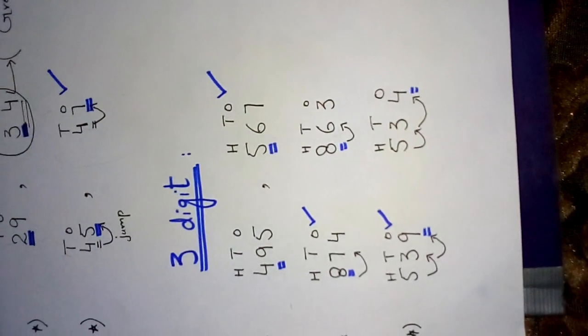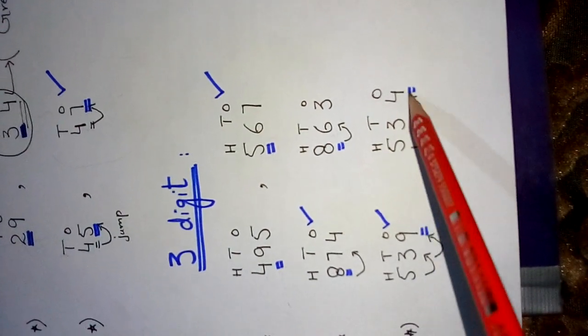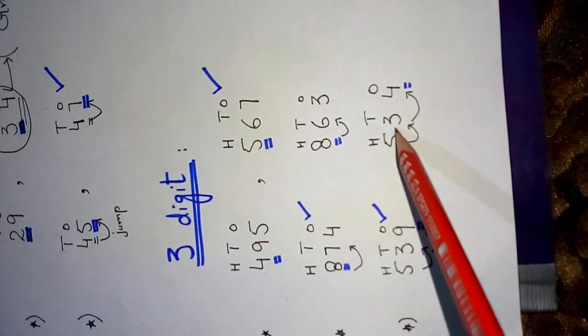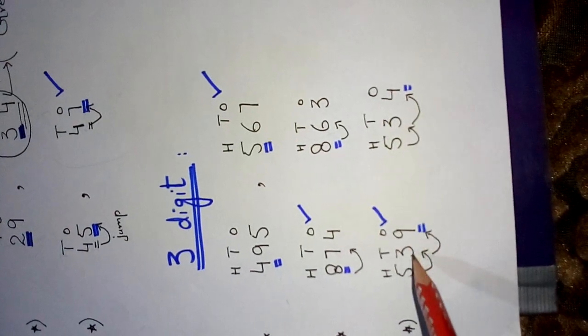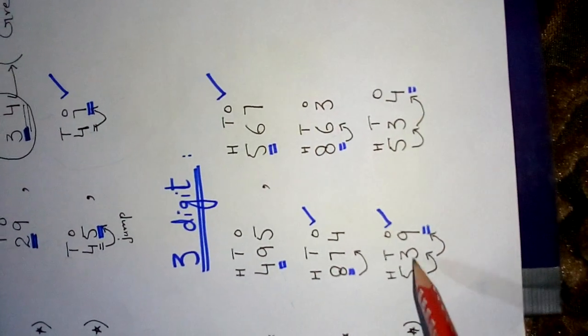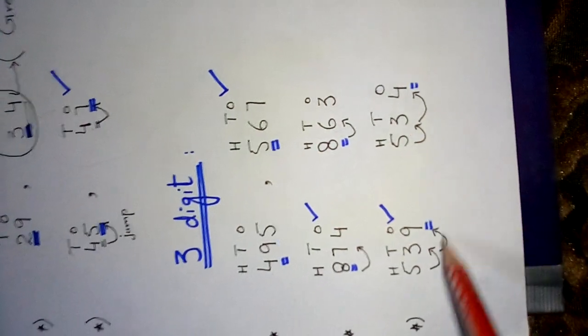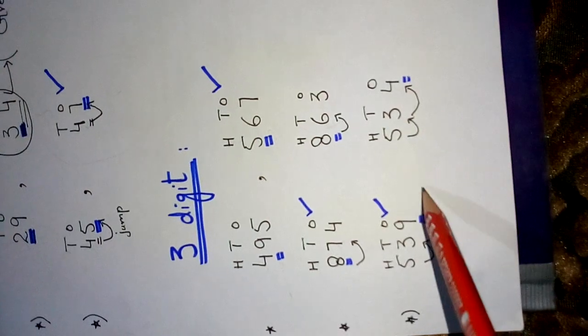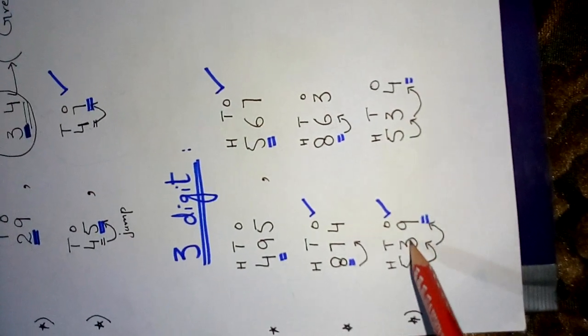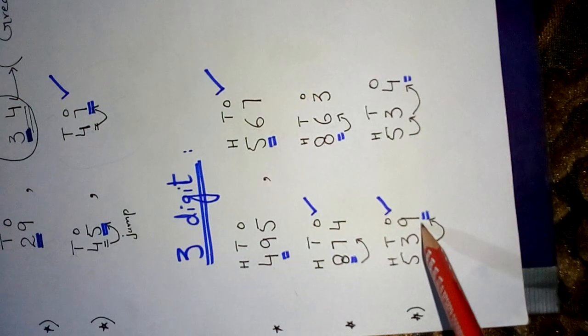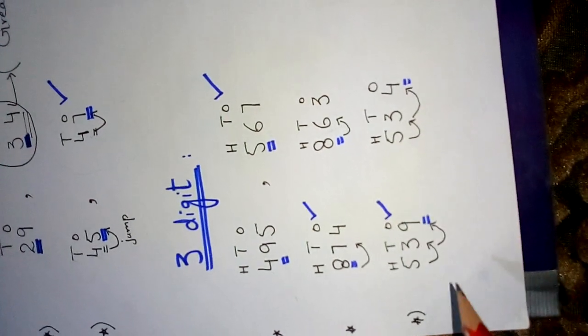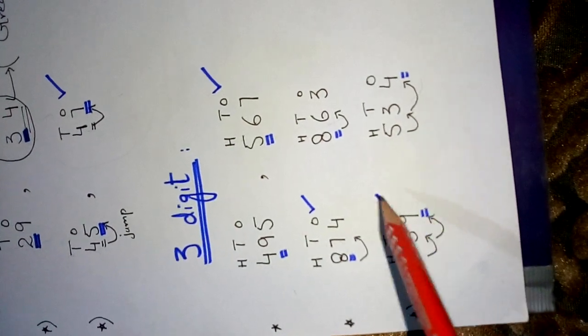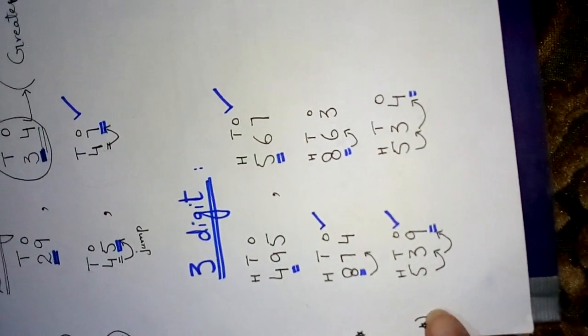Question number three: 539 and 534. From the left side, comparison starts. Here is 5 and 5, both are same. Jump to the next digit: 3 and 3, both are same. Jump to the next place value. Here is 9 and here is 4. Now between 9 and 4, which is greater? 9 is greater. So 539 is the greater number.